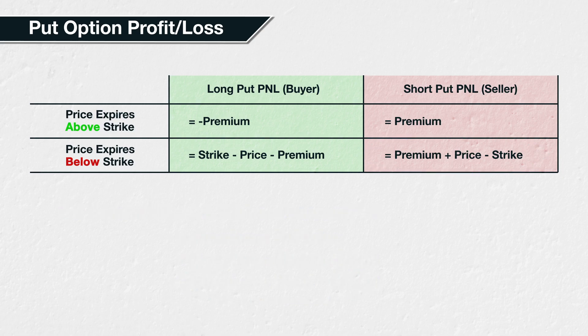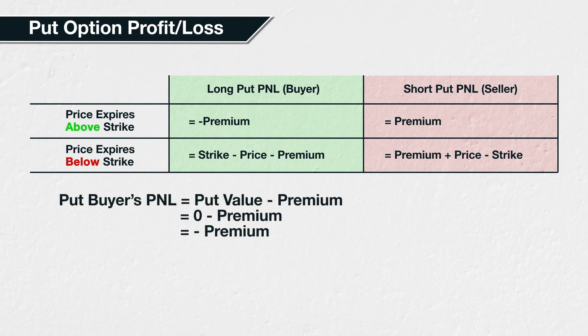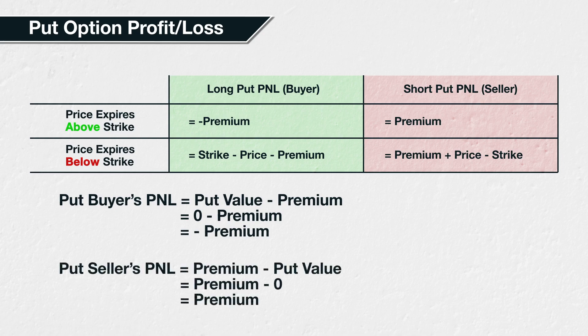When the put option has no value at expiry, because the price expires above the strike price, you can substitute in zero for the put value to give the put buyer's PNL as put value minus premium, or zero minus premium, or just minus premium. And the put seller's PNL is the premium minus the put value, or just the premium.